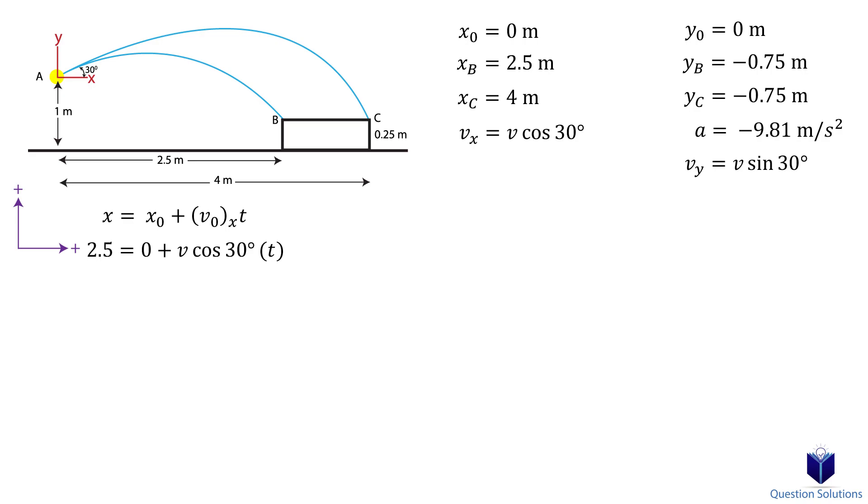Let's set this equation aside and write one for vertical motion. For that, we will use this equation. Substitute what we know. We now have two equations with two unknowns. Solving the two gives us a time value and a velocity value.